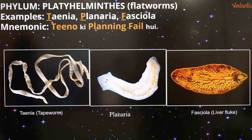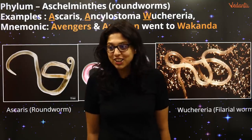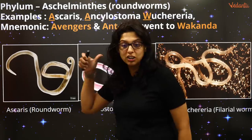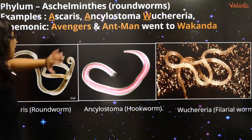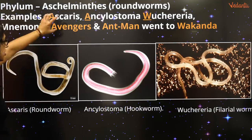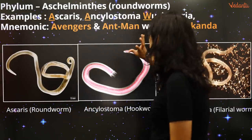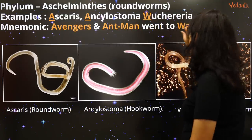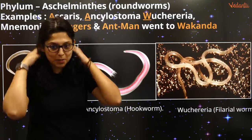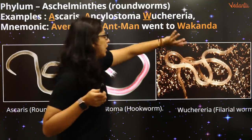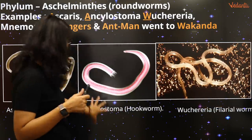Next mnemonic: 'Avengers and Ant-Man went to Wakanda.' Phylum Aschelminthes — roundworms. Avengers = Ascaris, Ant-Man = Ankylostoma, Wakanda = Wuchereria bancrofti. Wuchereria bancrofti causes filariasis — elephantiasis. Ankylostoma = hookworm. Ascaris = roundworm, causes ascariasis. They are all Aschelminthes.